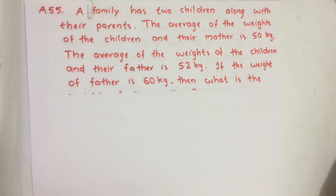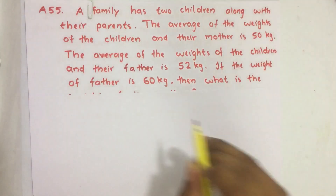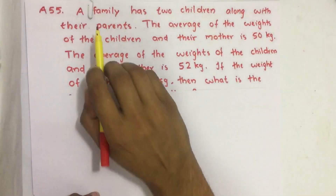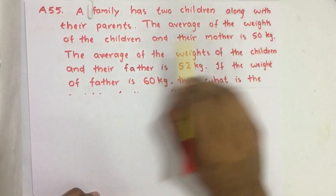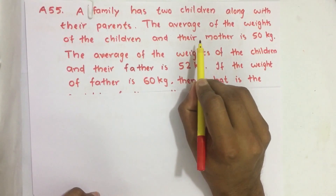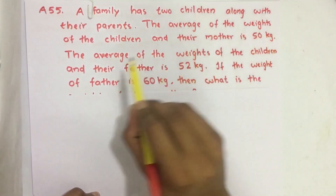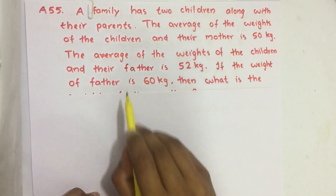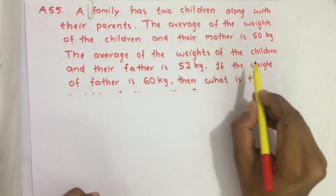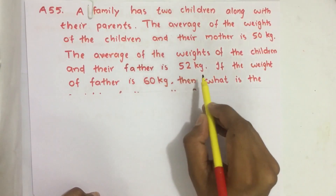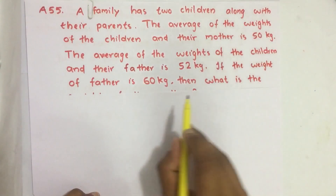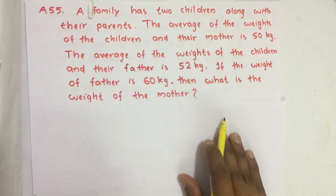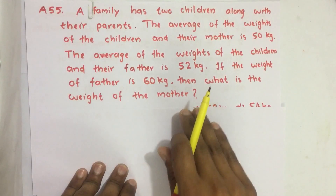Hello everyone. Here I am going to solve the 2019 CBSE question number 15 from question paper series A. A family has two children along with their parents. The average of the weights of the children and their mother is 50 kilogram. The average of the weight of the children and their father is 52 kilogram. If the weight of the father is 60 kilogram, then what is the weight of the mother?